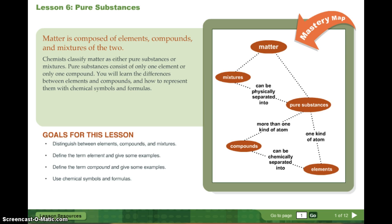Chemists classify matter as either pure substances or mixtures. Pure substances consist of only one element or only one compound. You will learn the differences between elements and compounds, and how to represent them with chemical symbols and formulas. Goals for this lesson: distinguish between elements, compounds, and mixtures; define the term element and give examples; define the term compound and give some examples; use chemical symbols and formulas.